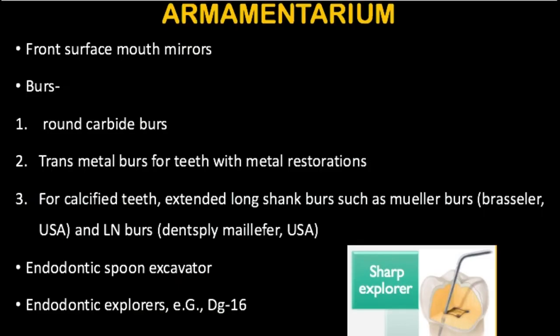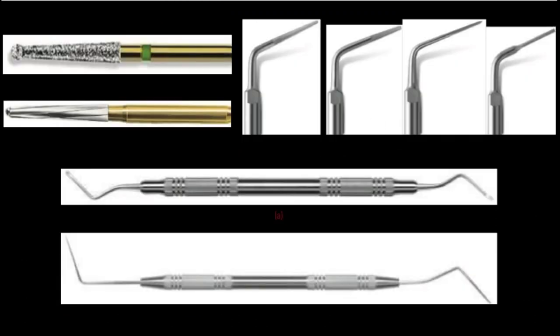Coming to the armamentarium required during access cavity preparation: you definitely need a good mouth mirror so that your illumination and magnification is good — preferably front-surface mouth mirrors. Coming to the burs, you can either use round carbide burs or you can use transmetal burs if you are doing an access opening through a crown. If the tooth is calcified, you can use extended long shank burs. You might also require an endodontic spoon excavator and endodontic explorers.